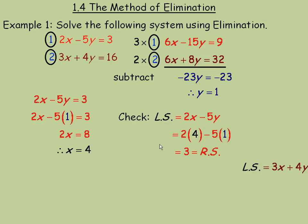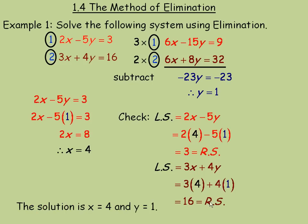Now we'll check it in the second one. 3x plus 4y is what's on the left side, so putting again the 4 here, and the 1 in place of y. 12 plus 4 is this 16. So it equals the right side, so it checks. So the solution is x equals 4 and y equals 1.